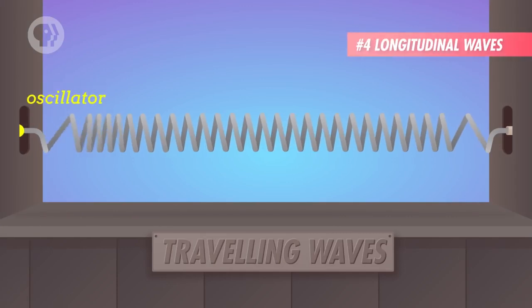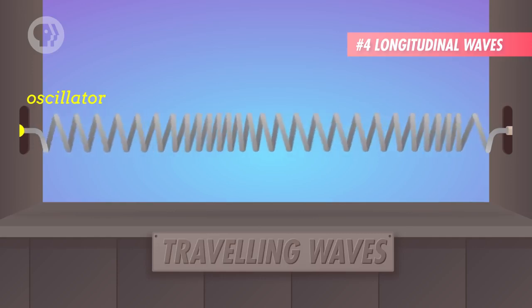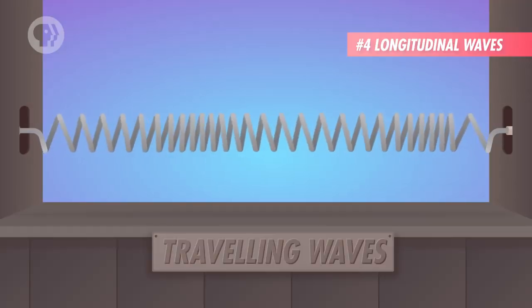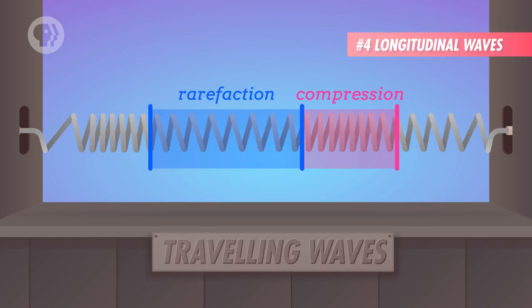But there's also longitudinal waves, where the oscillations happen in the same direction as the wave is moving. In the case of a longitudinal wave, the back and forth motion is more of a compression and expansion. These are the kinds of waves that you get by compressing and stretching a spring. And they're also the kinds by which sound travels, which we'll talk about more next time.